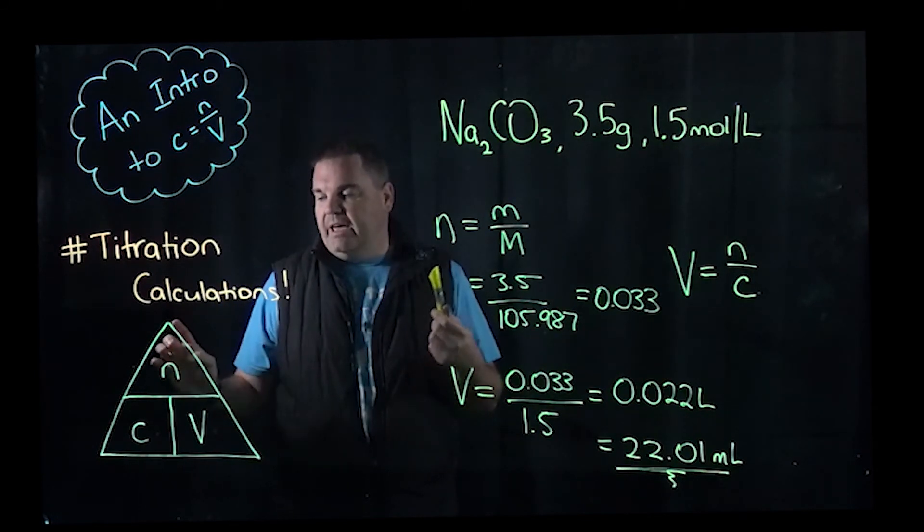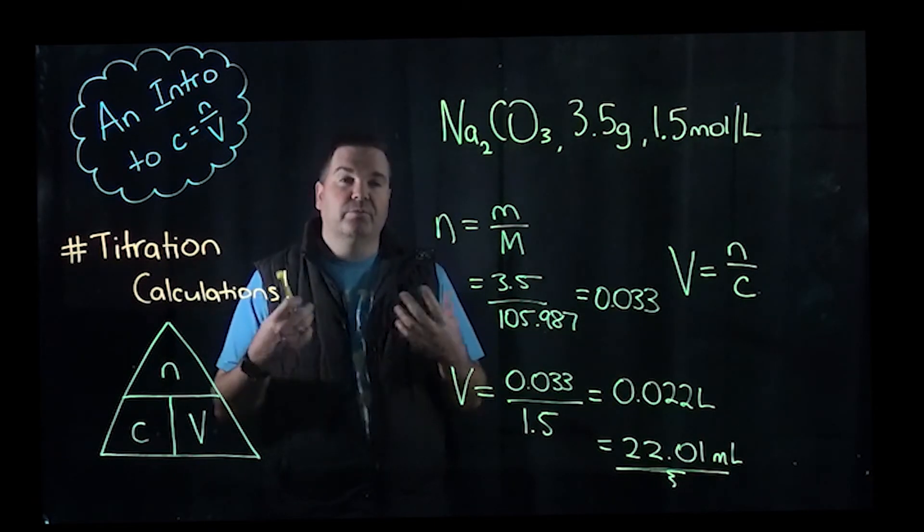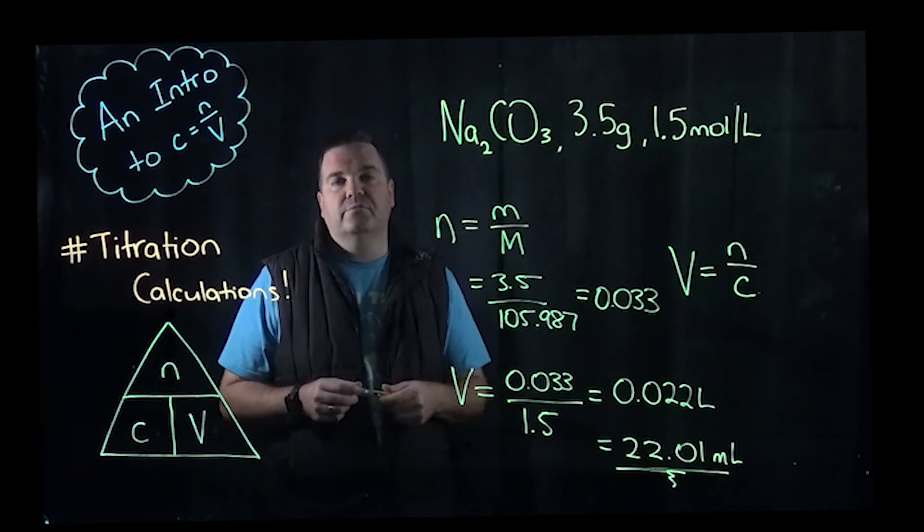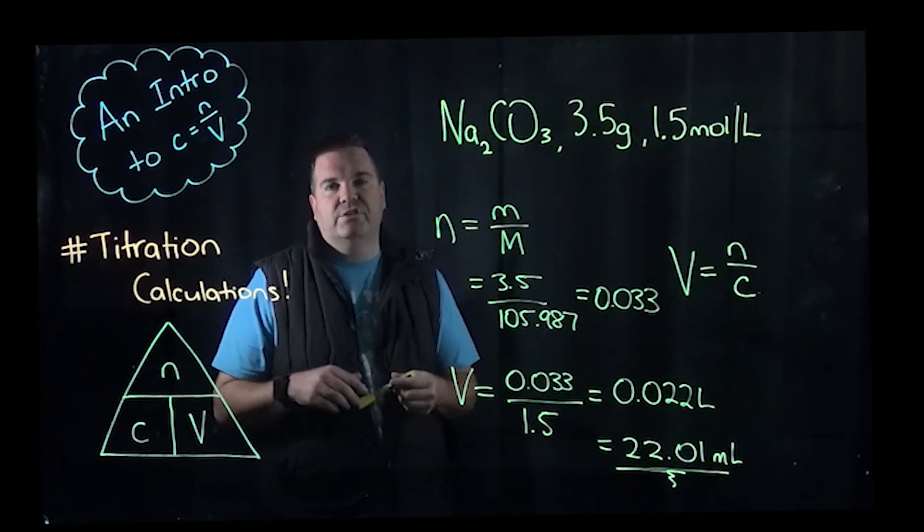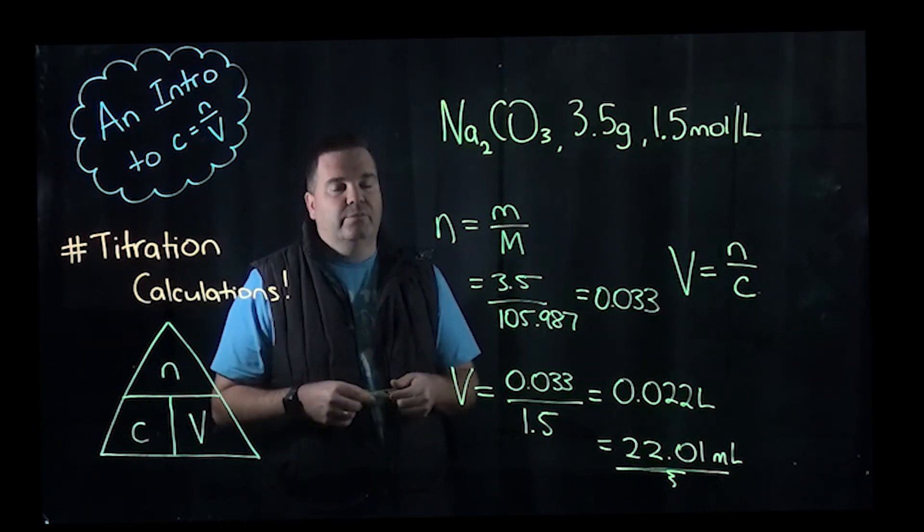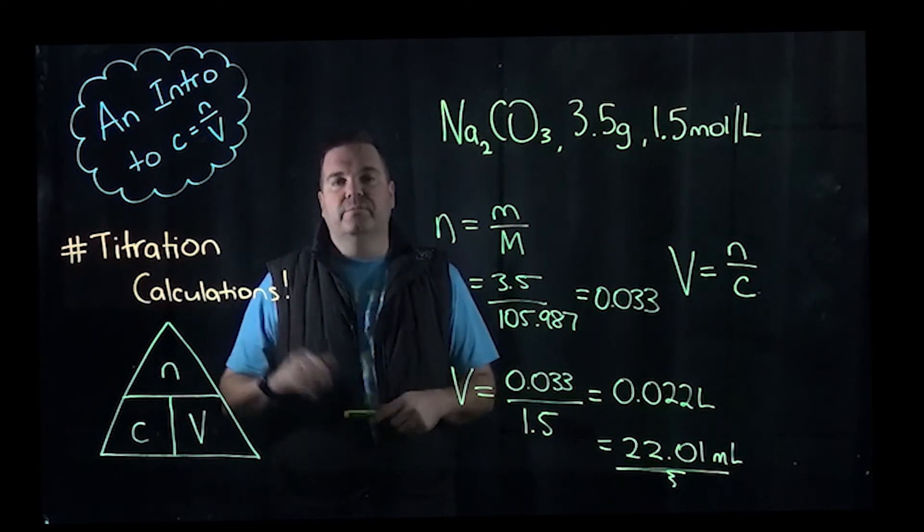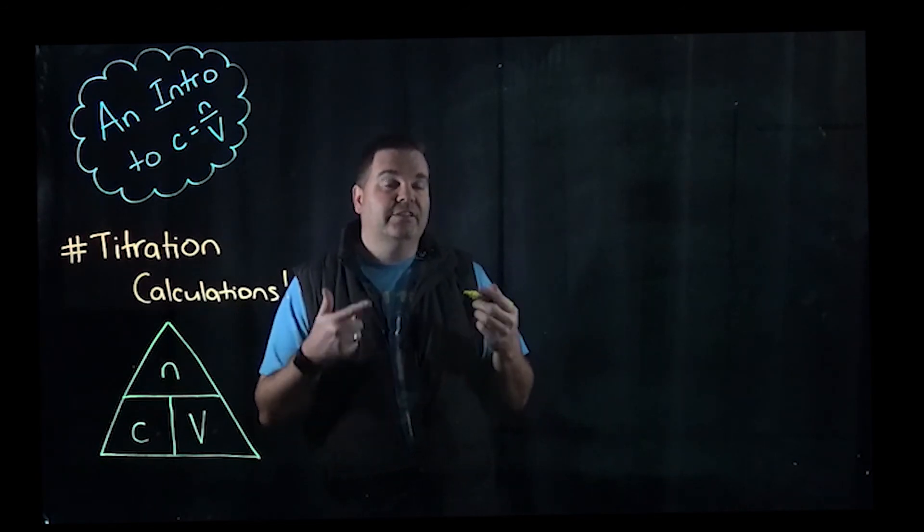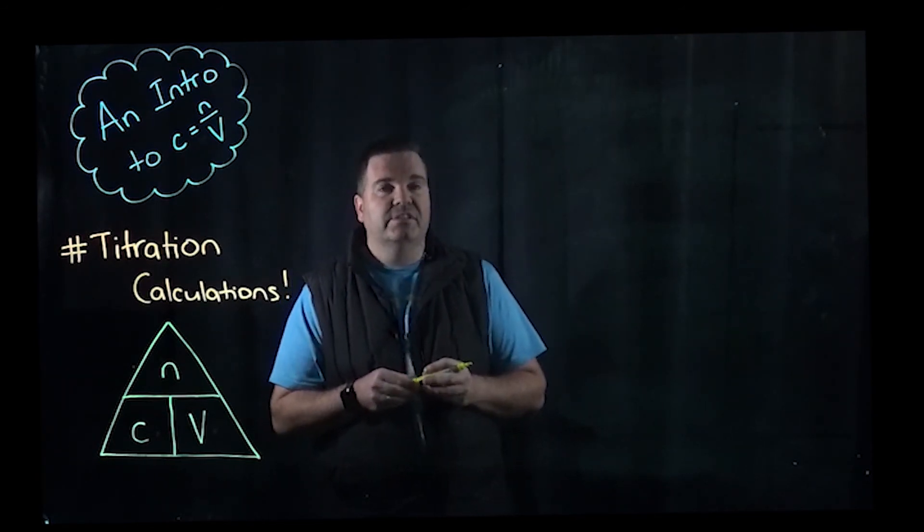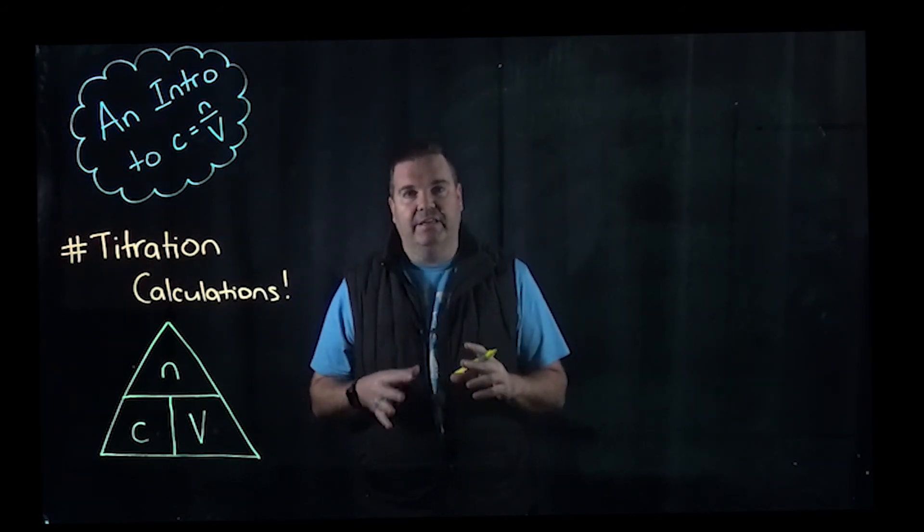So final one I'm going to show you, we've looked at concentration, we looked at volume, I'm going to show you how we get number of moles, which we might need sometimes when we're going into the final step of titration calculations, which is a different video. It's called titration calculations one and two, which you can find on my channel. But I'll just quickly show you how you use concentration and volume to get number of moles. And as I said, this is probably the most vital step if we're actually looking at full titration calculations.